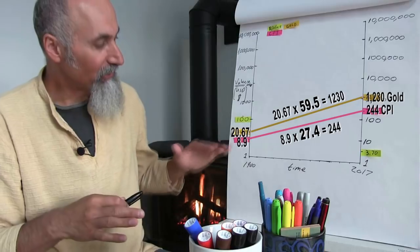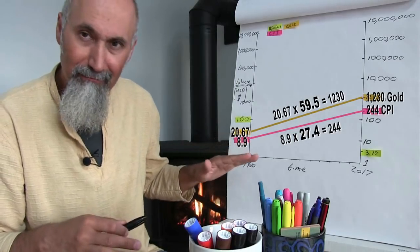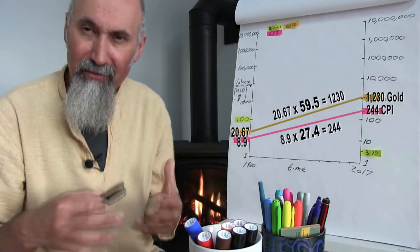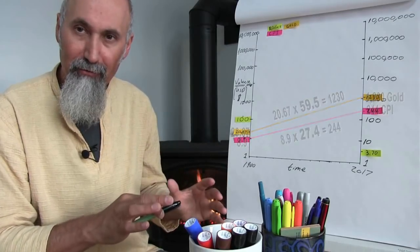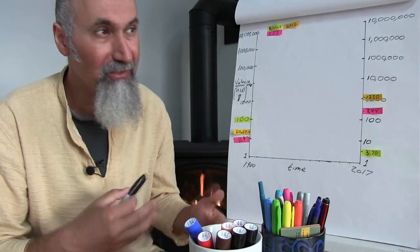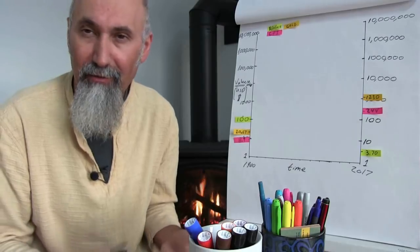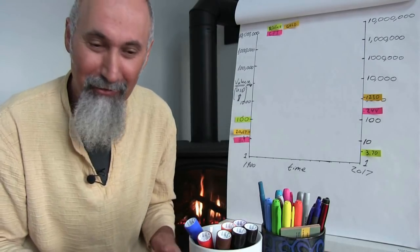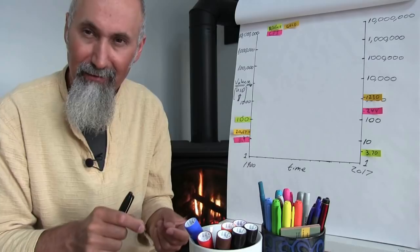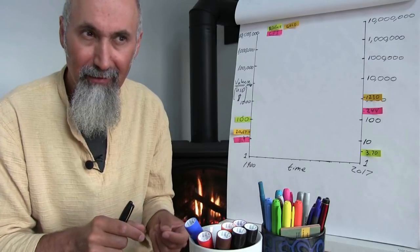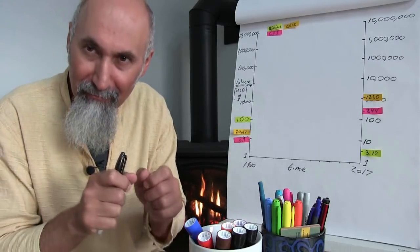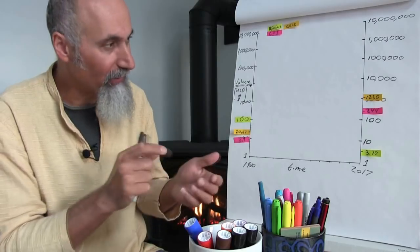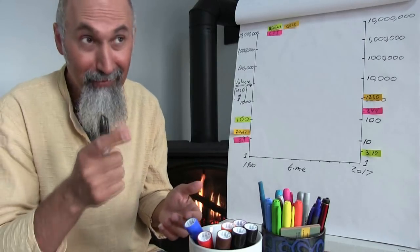Gold has increased twice as fast as the CPI, which is a good indication — based on government measures — that it's a good place to store value. Is it a good currency? Does everyone trade gold? I did geology, so I can test and figure out if something is gold — if it's malleable, if it's non-magnetic.